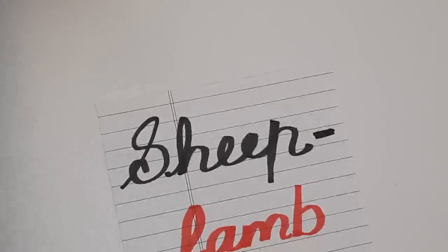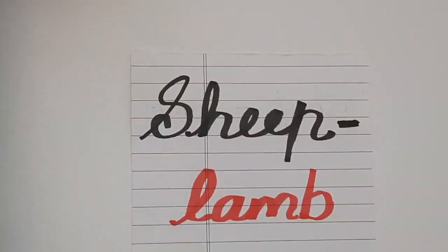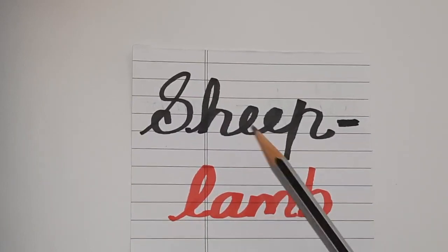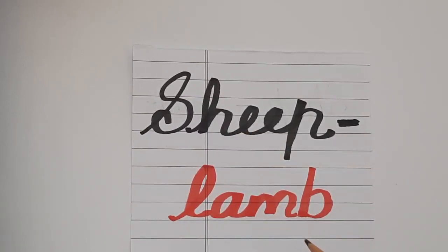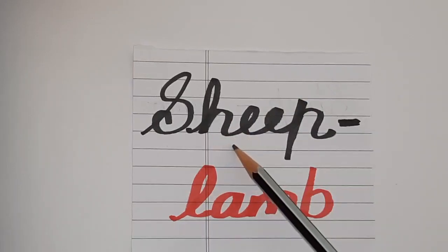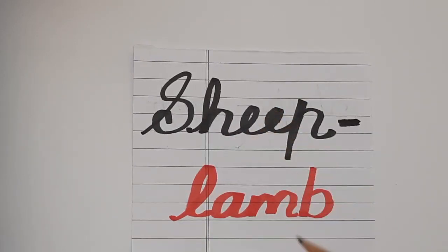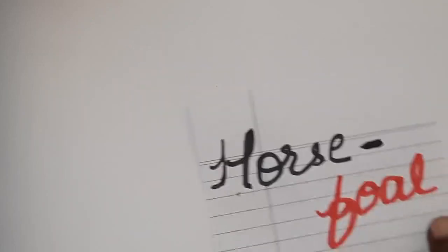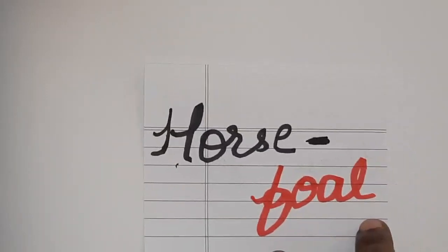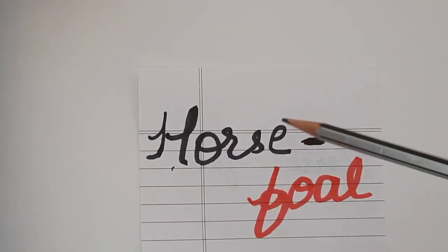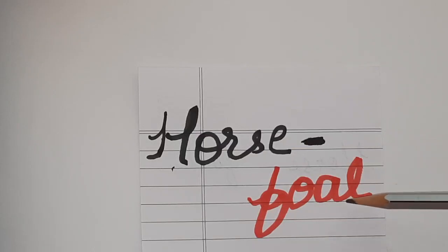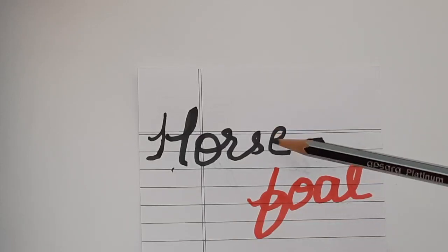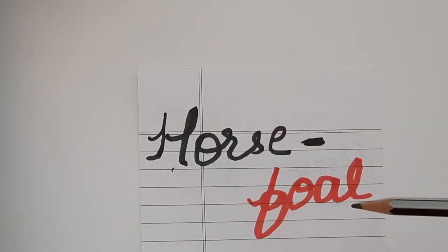So here we see the next one. Sheep — young one of the sheep is lamb. And young one of the horse is foal.